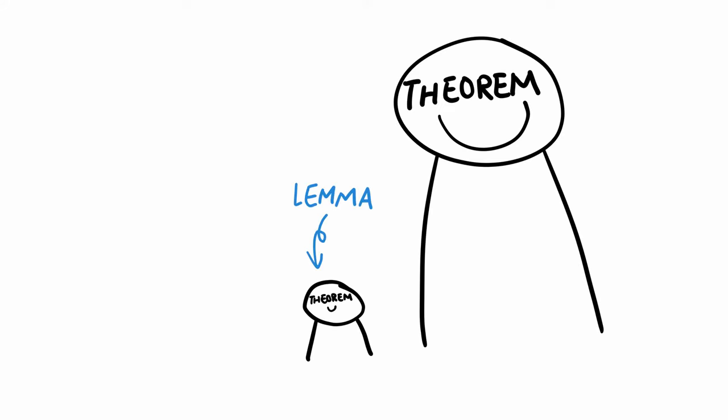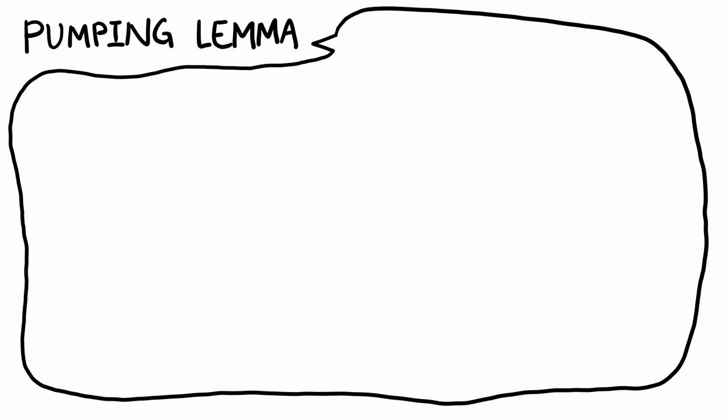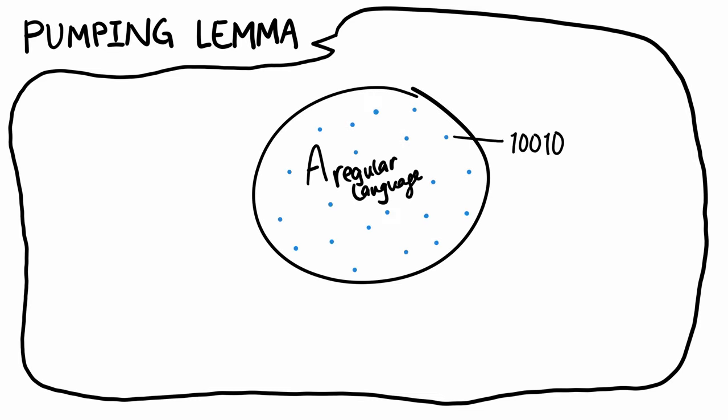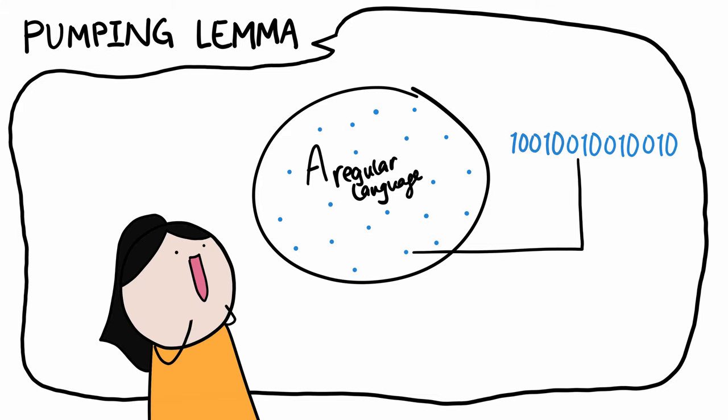The word lemma in mathematics refers to a mini-theorem. And simply, the pumping lemma states that if a language is regular, then every string in the language will have a section that can be repeated or pumped any number of times and still be in the language. It's a pretty incredible property. And as usual, we'll try to provide some intuition for the concept instead of the technical details.